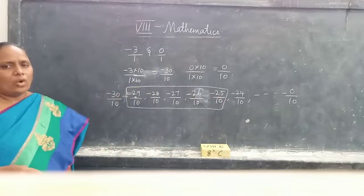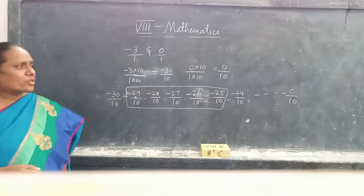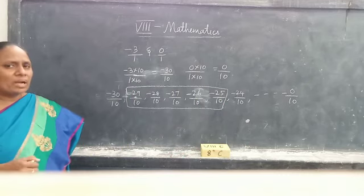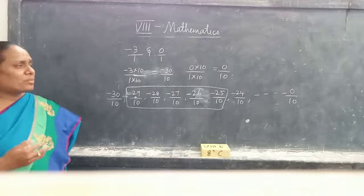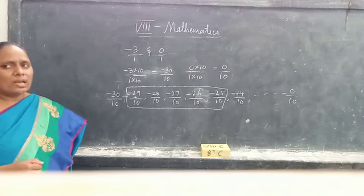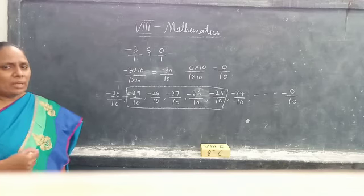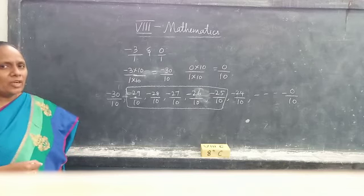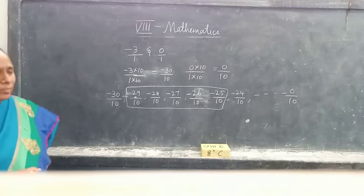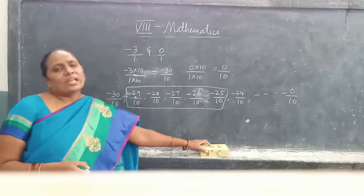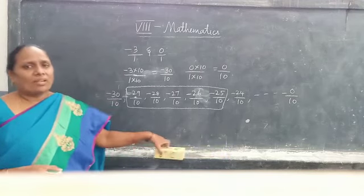I hope you all understood. We covered rational numbers — representation on the number line, and rational numbers between two rational numbers by the mean method and by making the denominator the same. We will see the exercise in the next class. Have a good day.